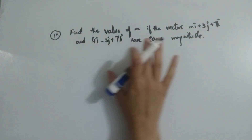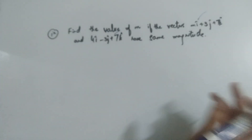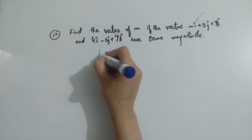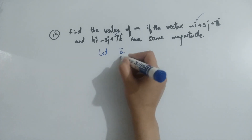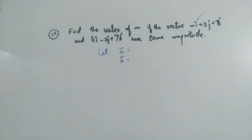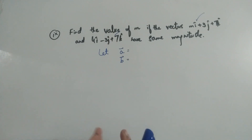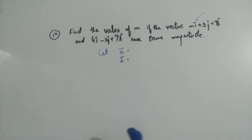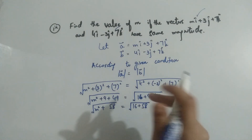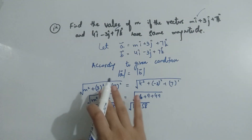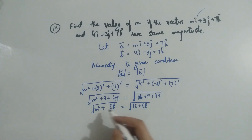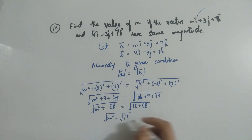We have to find the value of m. If these vectors are the same magnitude, you will find the m value. First, let us define vector a, and second, let us define vector b. According to the given condition, both magnitudes are the same. We will solve this and after simplifying, we get m squared equals 16, so m equals plus or minus 4. This is the answer.